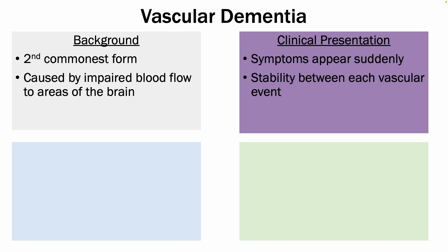If the cortex is affected, you would get apraxia, agnosia, behavioral, and mood disorders. However, if the subcortical tissue is affected, you would get things such as dysarthria, depression, or apathy. There is a stepladder deterioration in the patient, so they'll have a sudden decrease in cognitive function, and then a period of stability before another vascular event occurs.